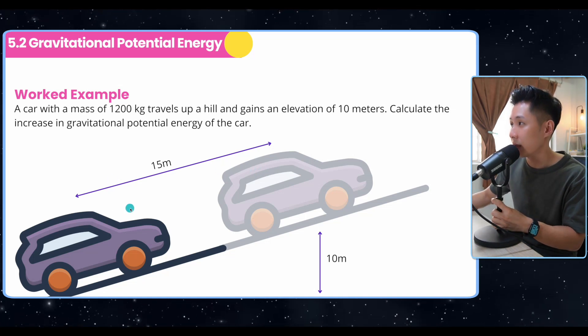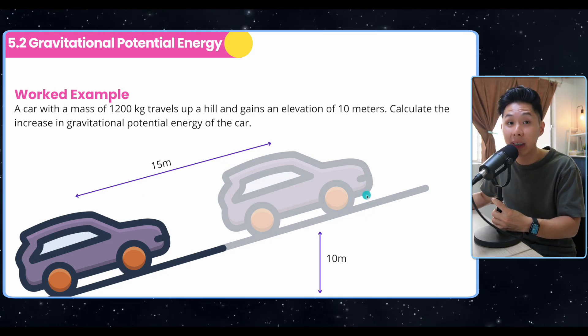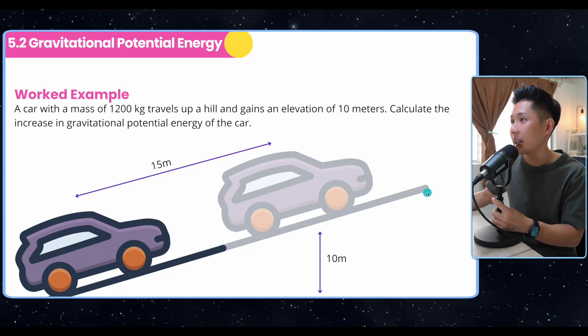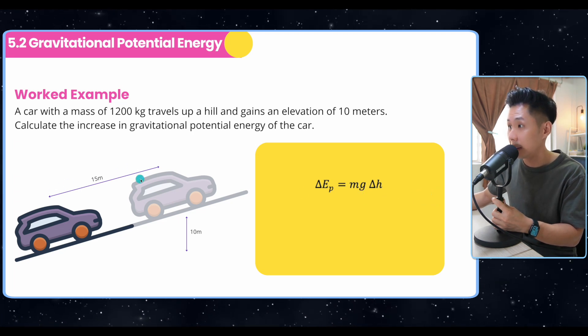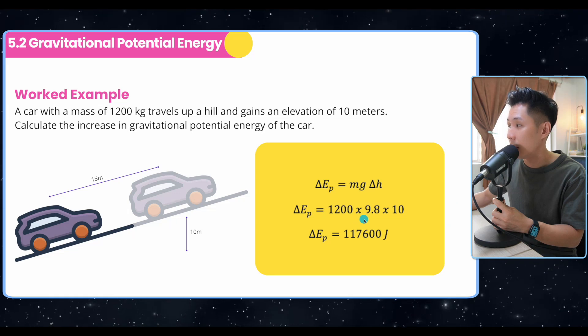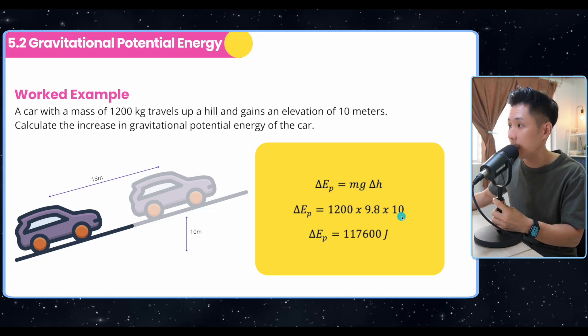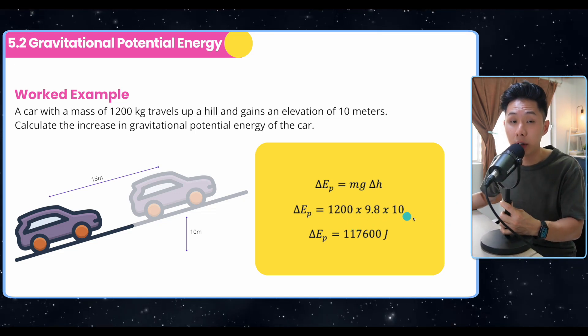Now let's solve a question. A car of mass 1200 kg gains an elevation of 10 meter. Calculate the increase in GPE of that car. So we can solve this very easily using MGH. Again, do not use 15 meter. Use 10 meter because that's the vertical height. Just use 1200 multiplied by 9.8 multiplied by 10, and we will get the increase in potential energy of that car.